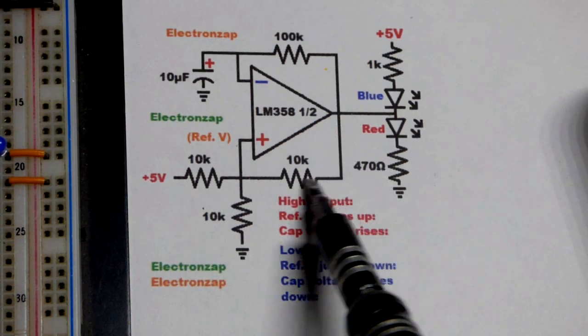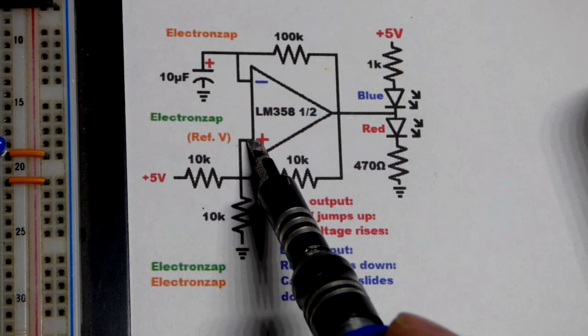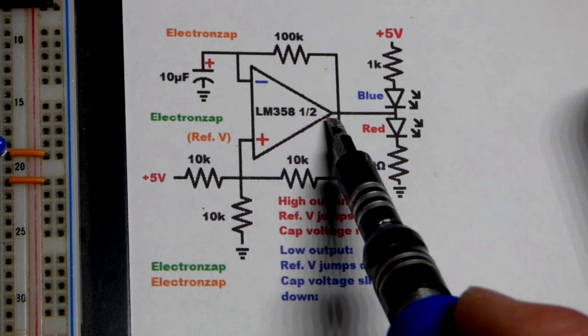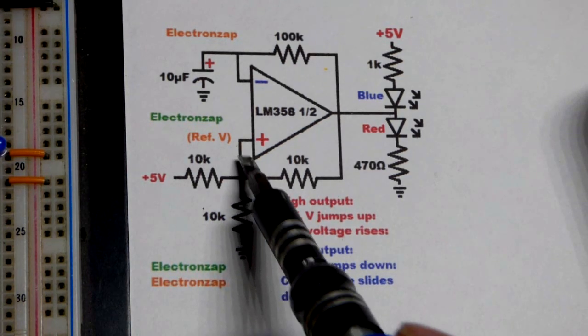We also have positive feedback right there, so when the output is high it lifts up that voltage a little bit. When the output is low it pulls that voltage down a little bit, so it's a moving reference voltage.